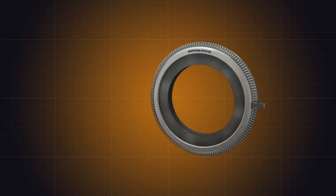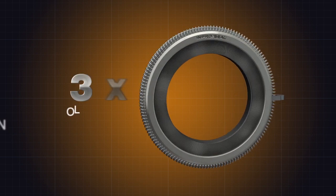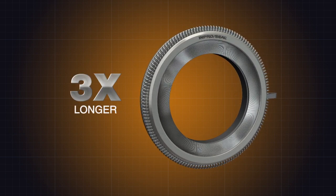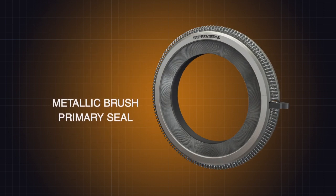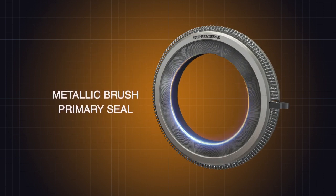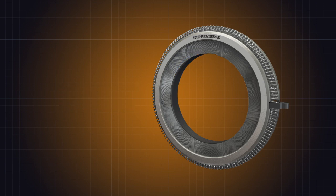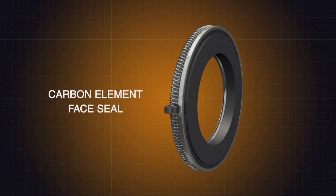With replacement intervals three times longer than those of carbon rings while providing stable leakage reduction, densely packed metallic bristles form a brush that serves as the primary seal while a carbon element provides face sealing.